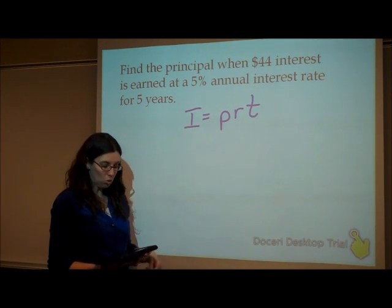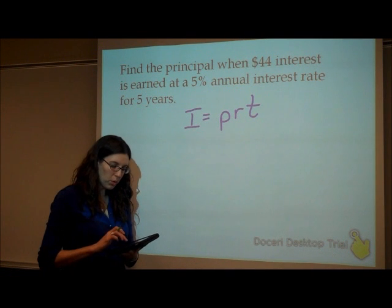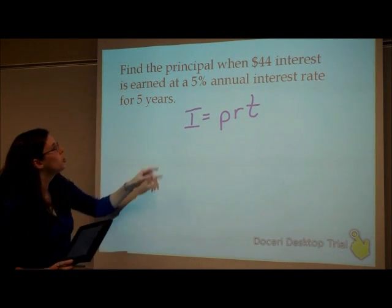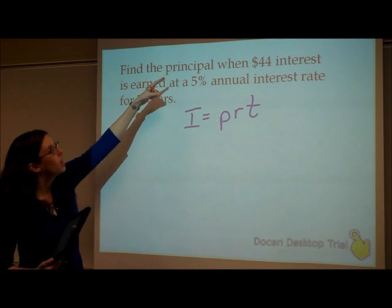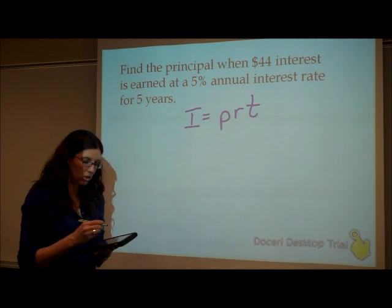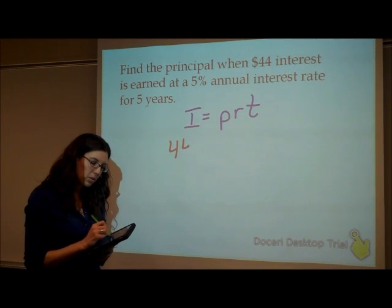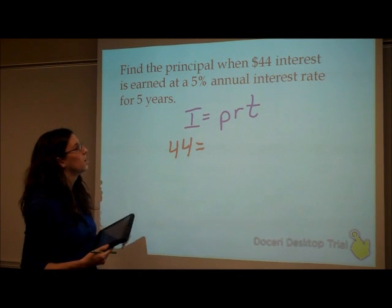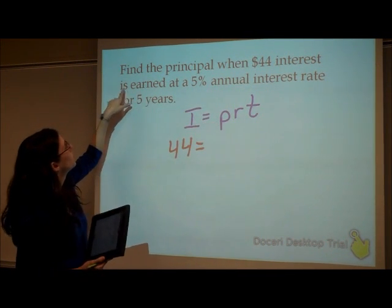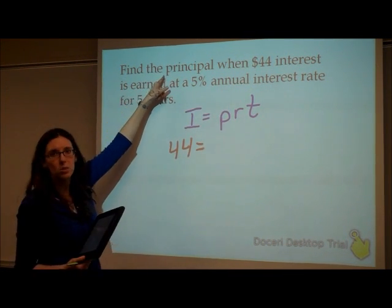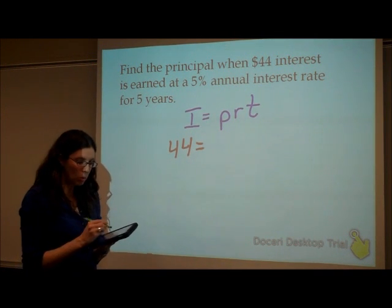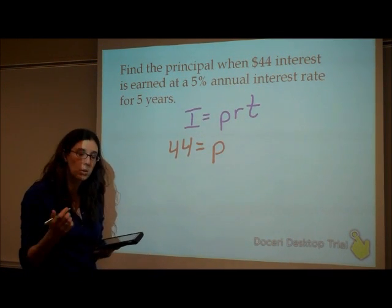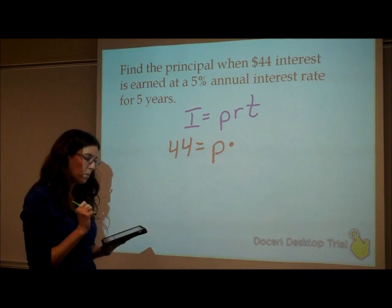Now, let's go through and rewrite this, putting in the numbers for what we know. Do we know the amount of interest earned? Yeah. It's $44. So I'm going to put 44 over here. Now, what's my principal? That's what I'm trying to find. So I'm going to keep the P because that's what I'm trying to find. That's my variable, my unknown.